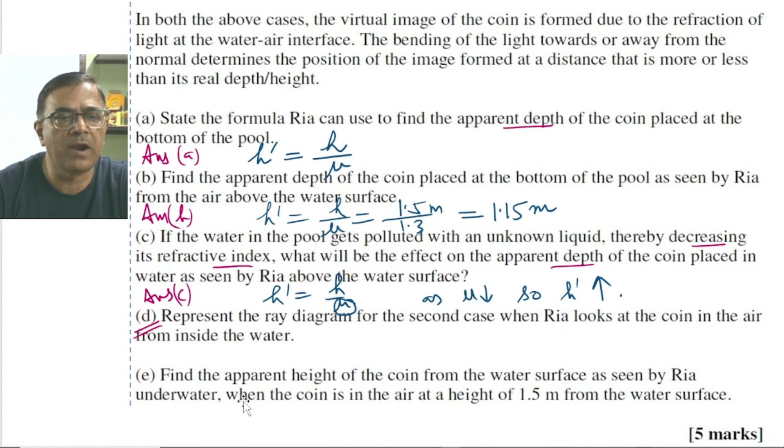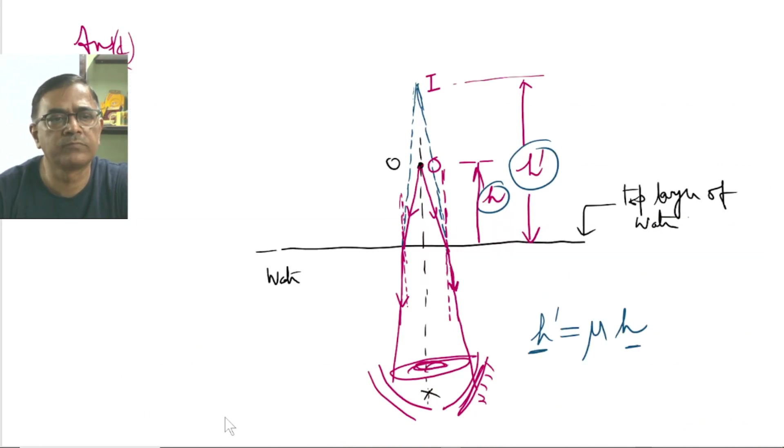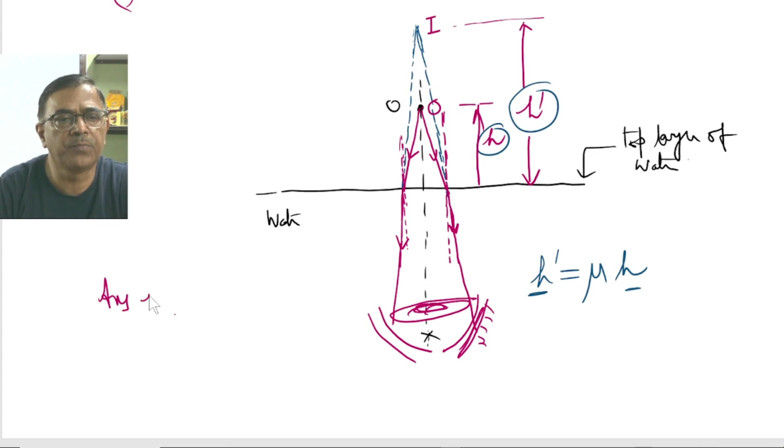Now let us read part E of the problem as well. In part E of the problem, we are supposed to find the apparent height of the coin, which is placed in air and seen by Rhea while being inside water. So let's do it. We already know the formula. Answer, part E.